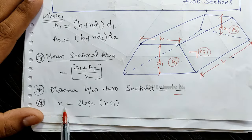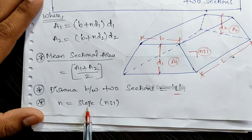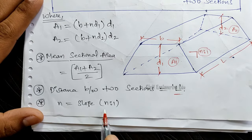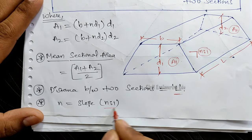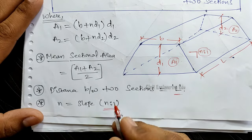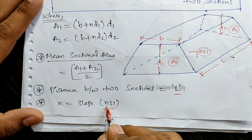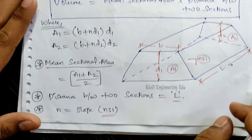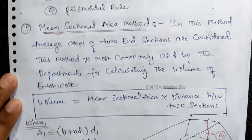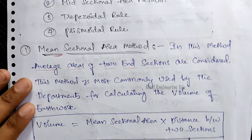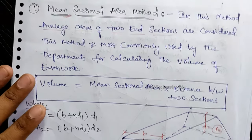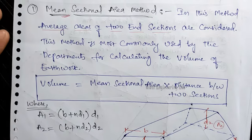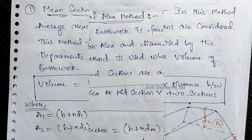N is the slope, given in N-to-1 format, so N is taken from the slope value provided in the problem. That completes Method 1 — the mean sectional area method.